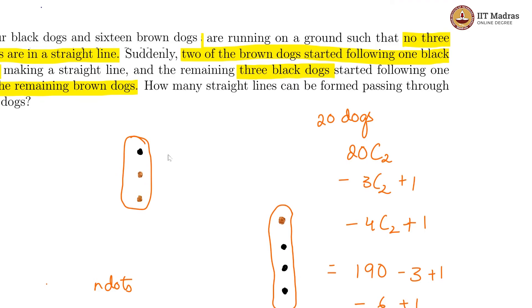So there are 183 unique lines you can draw through these dogs. Here, the question says how many straight lines can be found passing through the dogs?